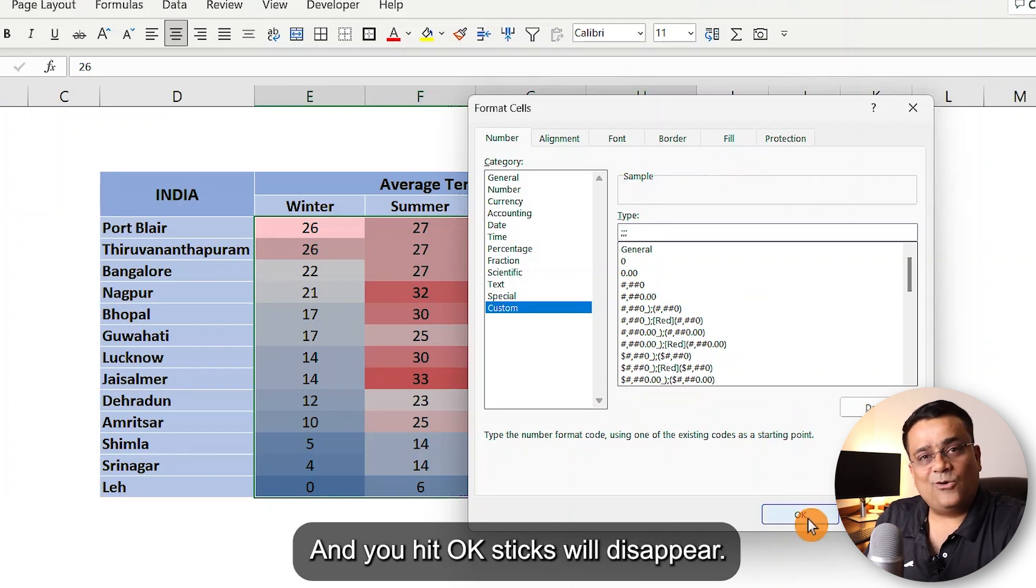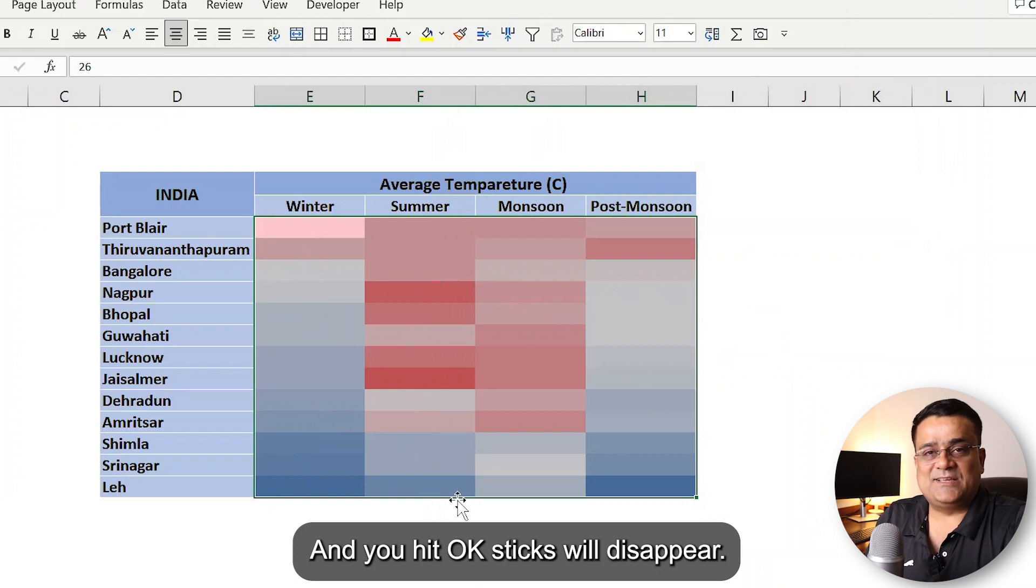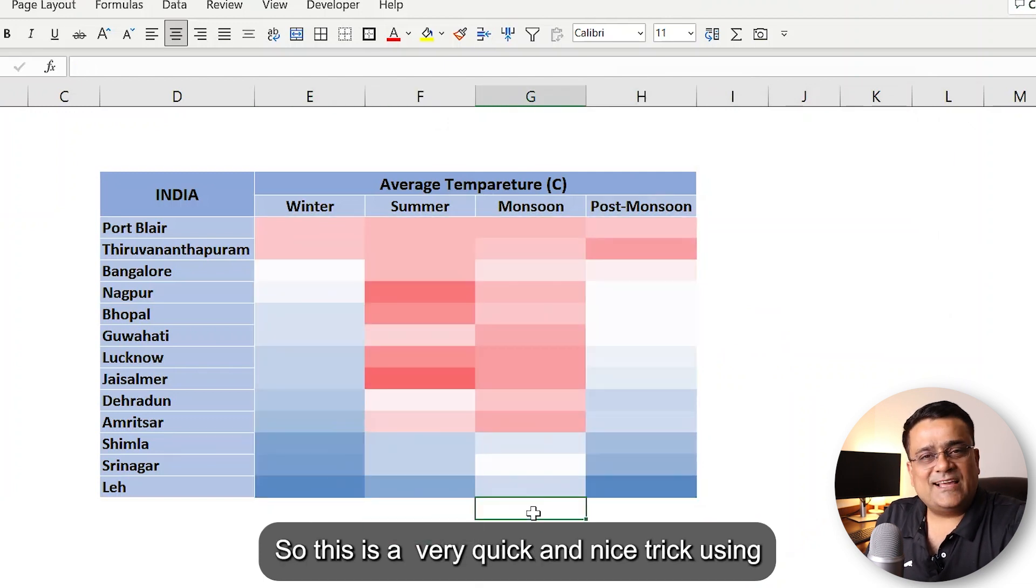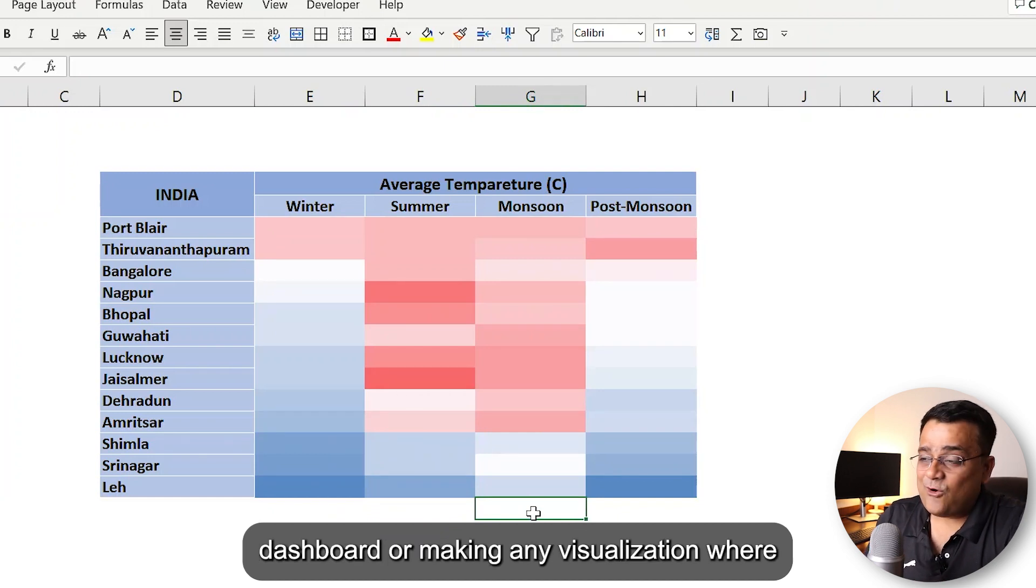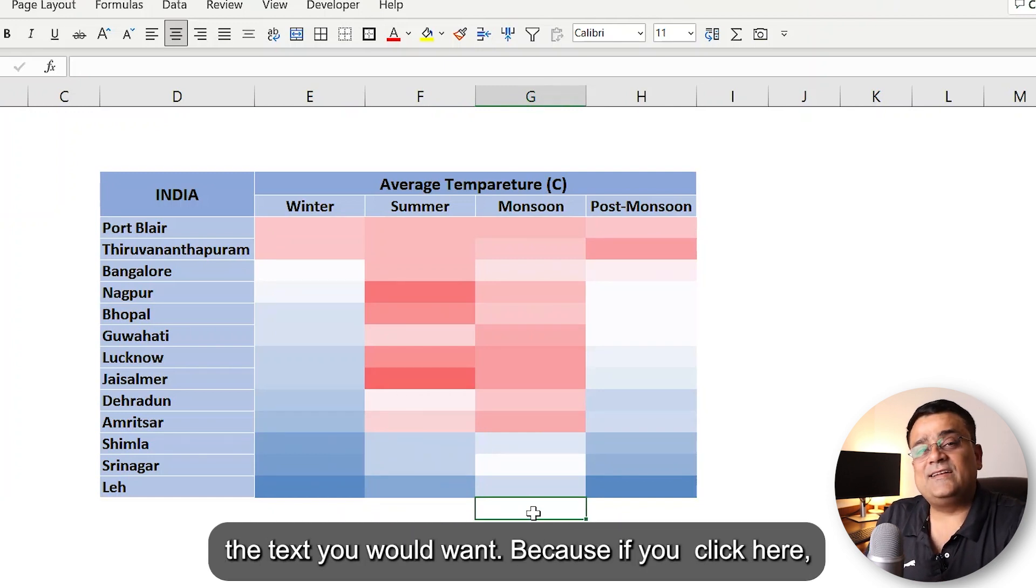So this is a very quick and nice trick using which whenever you are maybe designing a dashboard or making any visualization where you don't want the text. Because if you click here, you'll still be able to see that text is there.